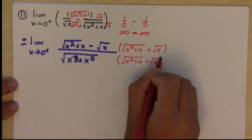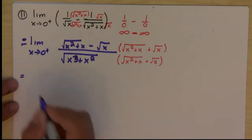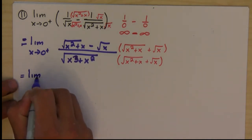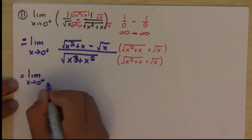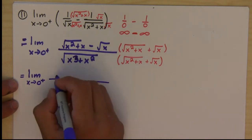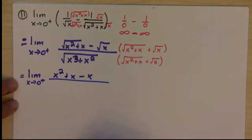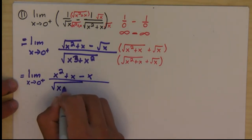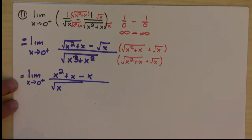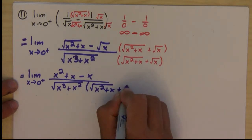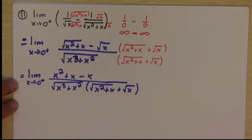And that would give me, on the numerator, I'm going to have x squared times x plus x minus x. And on the denominator, I'm just going to have square root of x cubed plus x squared times square root of x squared plus x plus square root of x. Now the obvious thing is that these x's cancel.